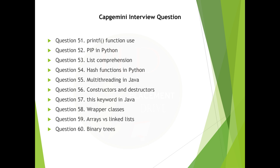Question 51: Printf function use. Question 52: Pip in Python. Question 53: List comprehension. Question 54: Hash functions in Python. Question 55: Multithreading in Java. Question 56: Constructors and destructors. Question 57: This keyword in Java. Question 58: Wrapper classes. Question 59: Arrays vs. linked lists.